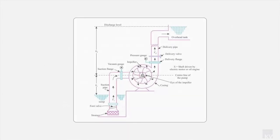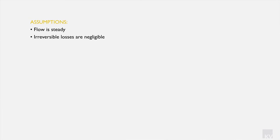To begin with, we're going to look at what is involved in the system. Recalling our previous session, we identified that we have the impeller, the casing, the suction section, and the delivery section. The assumptions we can make are that the flow will be steady and that irreversible losses can be neglected.